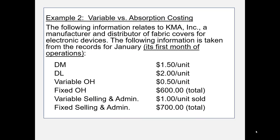Example 2 will demonstrate how to prepare an income statement for both variable and absorption costing. The following information relates to KMA Inc., a manufacturer and distributor of fabric covers for electronic devices. The following information is taken from the records for January, its first month of operations.